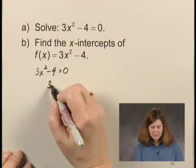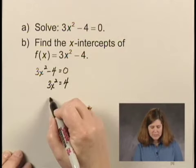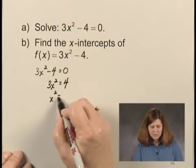We add 4 to both sides of the equation, and we divide both sides by 3, and we have x² = 4/3.